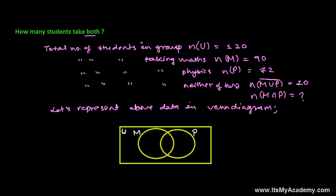The students which are not learning anything is 10, so 10 will be outside both circles because they are not learning math or physics. Now let me suppose the students which are learning math as well as physics is x. The total math learners were 90, so the left part of the math circle only is 90 minus x. Similarly for physics — total physics learners were 72, and x is already in the intersection, so the physics-only part is 72 minus x. So 90 minus x students are learning just math, x students are learning both subjects, and 72 minus x students are learning just physics, and 10 students are learning neither subject.